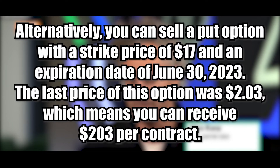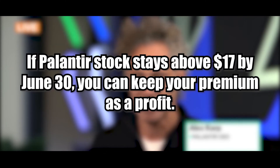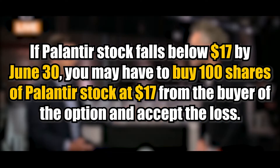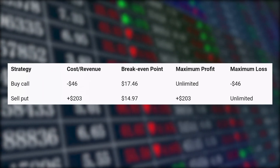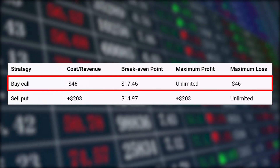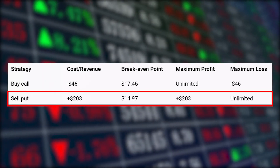Alternatively, you can sell a put option with a strike price of $17 and an expiration date of June 30th, 2023. The last price of this option was $2.03, meaning you can receive $203 per contract. If Palantir stock stays above $17 by June 30th, you keep your premium as profit. If it falls below $17, you may have to buy 100 shares at $17 from the buyer and accept the loss. A summary table shows that buying a call option gives you unlimited upside potential, a higher break-even point, and a higher maximum loss, while selling a put option gives you limited upside potential, a lower break-even point, and a lower maximum loss.